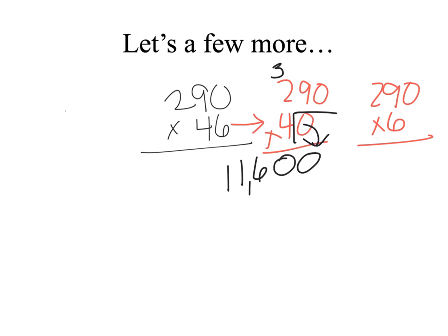Now I'll do 290 times 6. 6 times 0 is 0. 6 times 9 is 54. I'll put down my 4 and regroup my 5. 6 times 2 is 12, plus 5 is 17. 1,740.